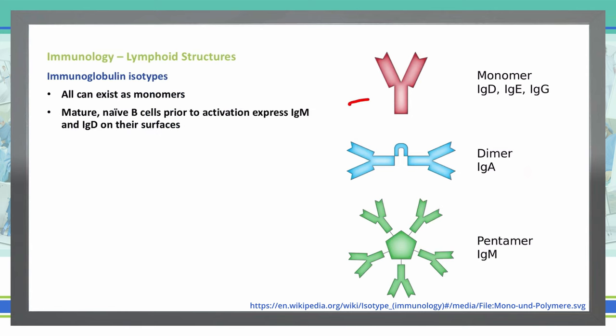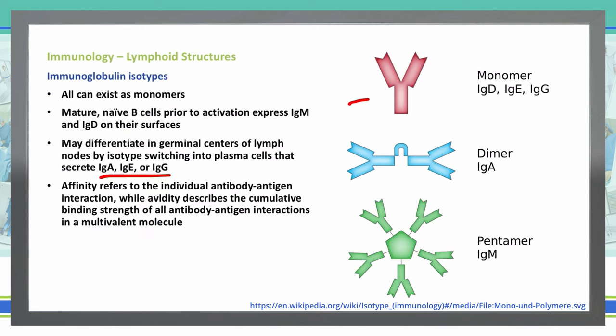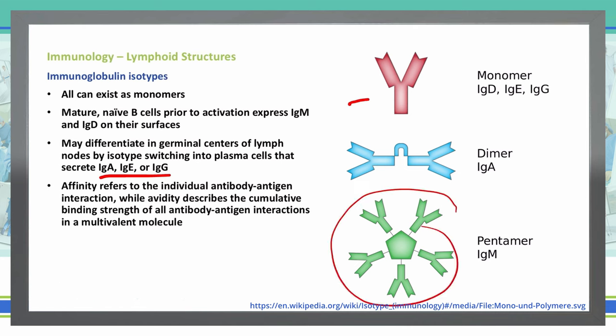For immunoglobulin isotypes, they start as mature naive B cells, then they're activated to express IgM and IgD on their surfaces. They can differentiate into germinal centers of the lymph nodes by isotype switching, in the plasma cells, which will then secrete IgA, IgE, and IgG. Affinity refers to individual antibody-antigen interaction, whereas avidity describes the cumulative binding strength of all antibody-antigen interactions in a multivalent molecule — how strongly these can interact together, not just the individual interactions.